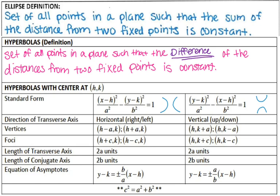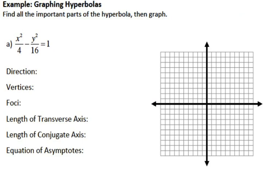With the ellipses, you did have a formula for C for the foci. You are going to have a formula for C for the foci for your hyperbolas as well. It's just that with this one, it is C squared equals A squared plus B squared. So let's go ahead and make a graph.